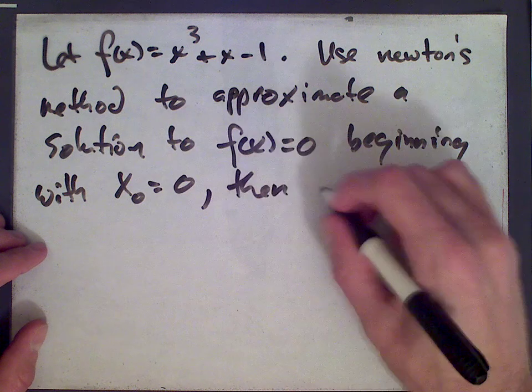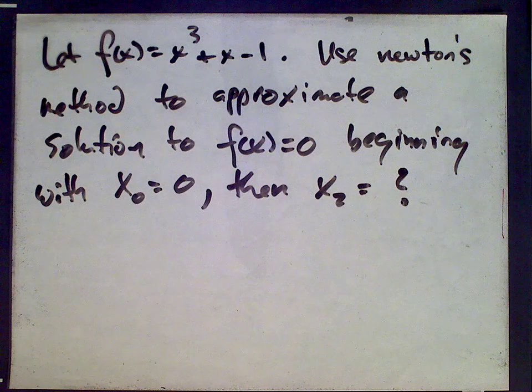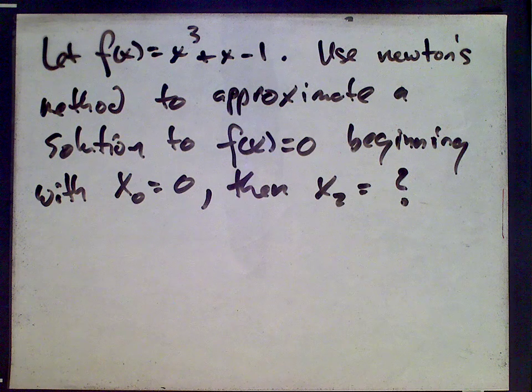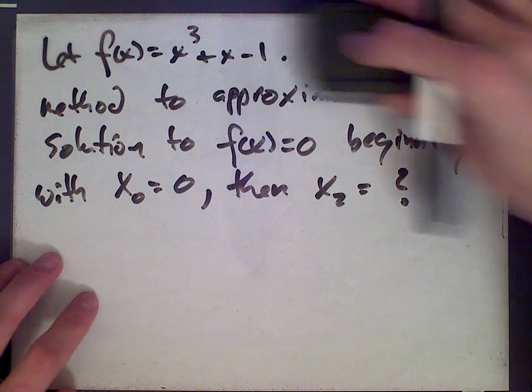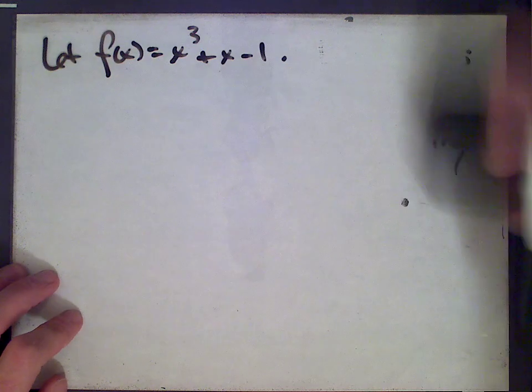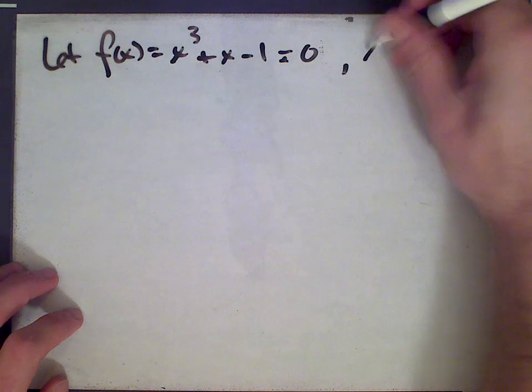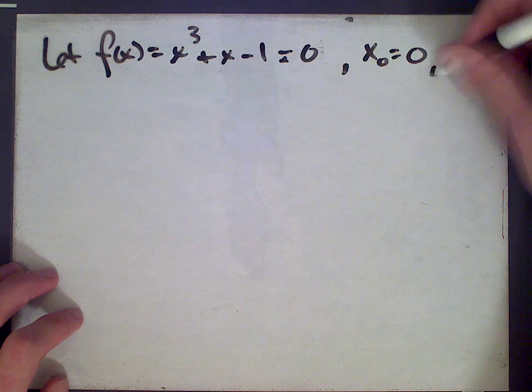Then using Newton's method, x two is going to be what? Okay, so let me just give myself some room here. We're using Newton's method to find a solution to f of x equals zero. We're using x zero is zero and we need to find x two.